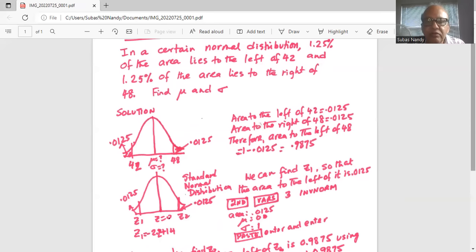And to the right of Z2, which is equivalent to 48, the area is 0.0125. And remember the area to the left of Z2, as we have found before, is 0.9875.